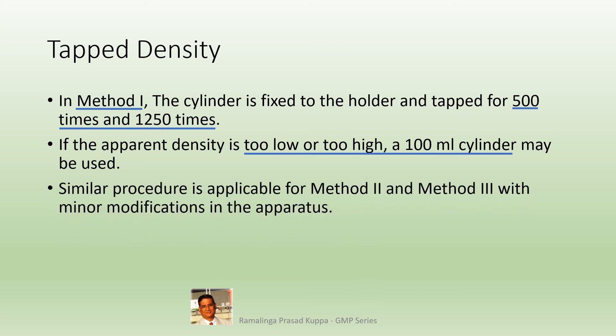A similar procedure applies for method 2 and method 3 with minor modifications in the apparatus, including dimensions of the cam, the settling apparatus, and the cylinder support. Most commercially available tap density testers comply with these requirements, but you may verify the dimensions prescribed in the compendia once for confirmation.